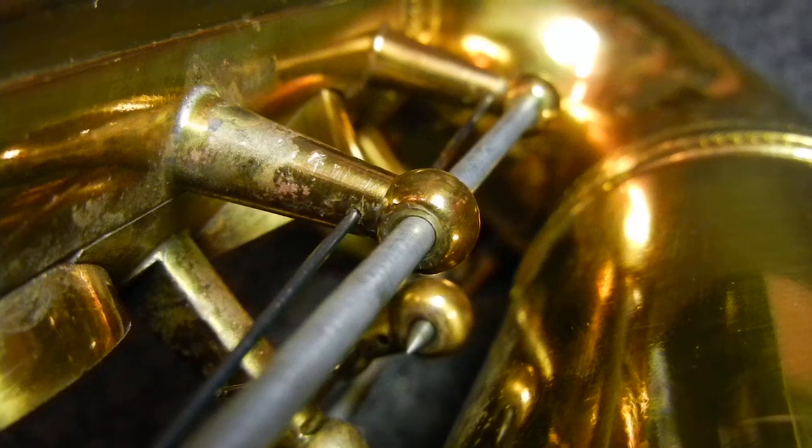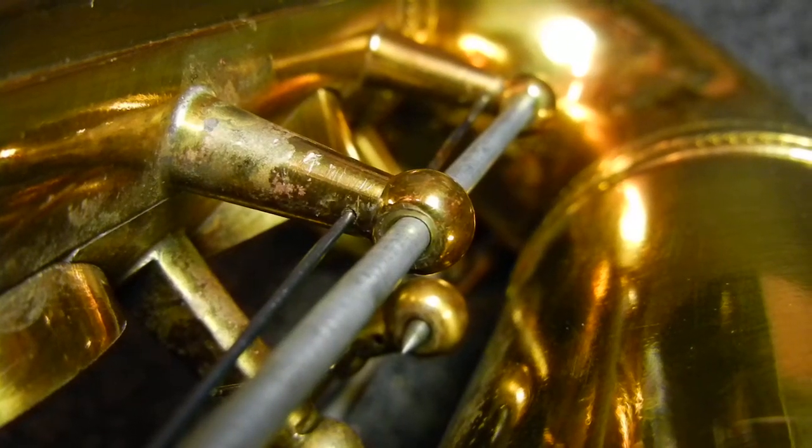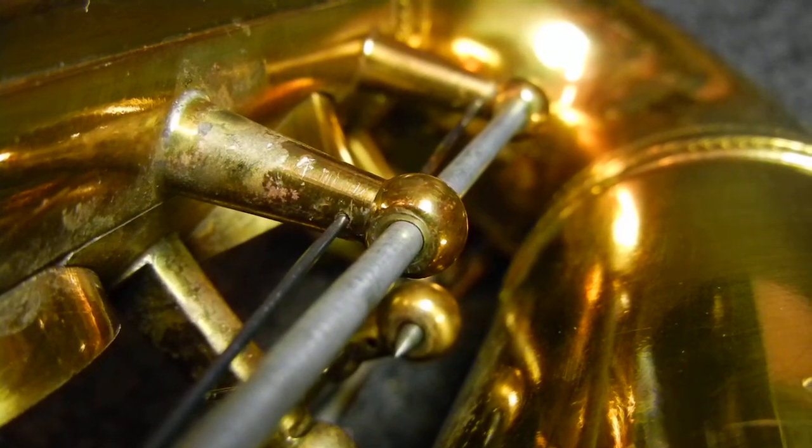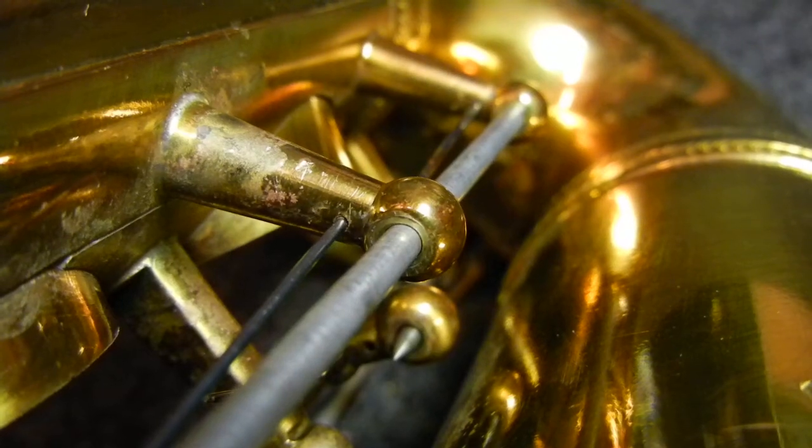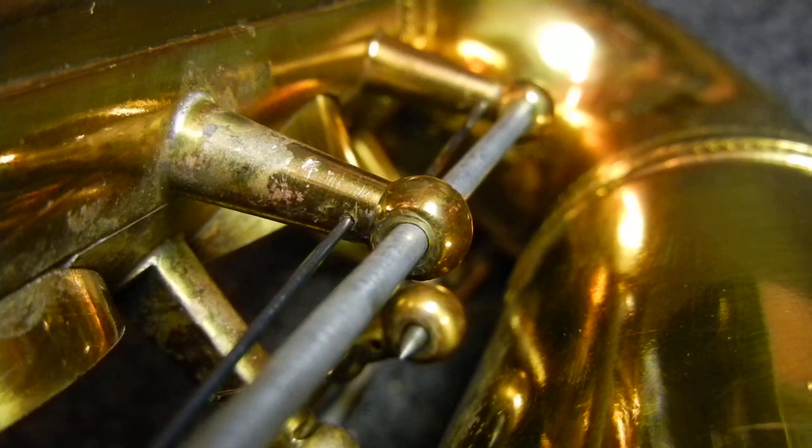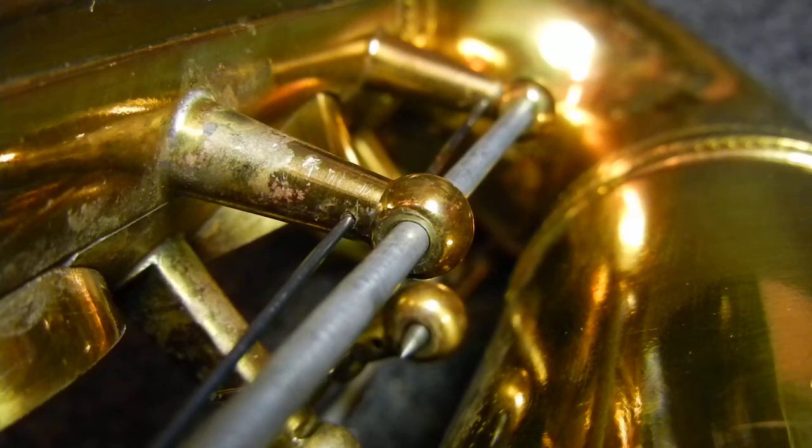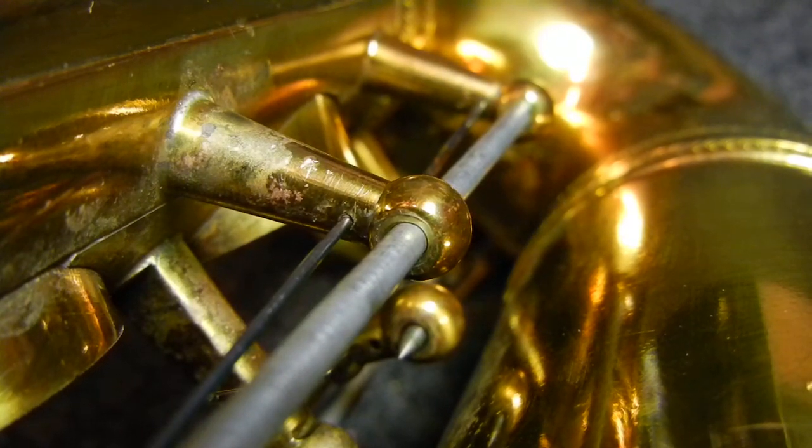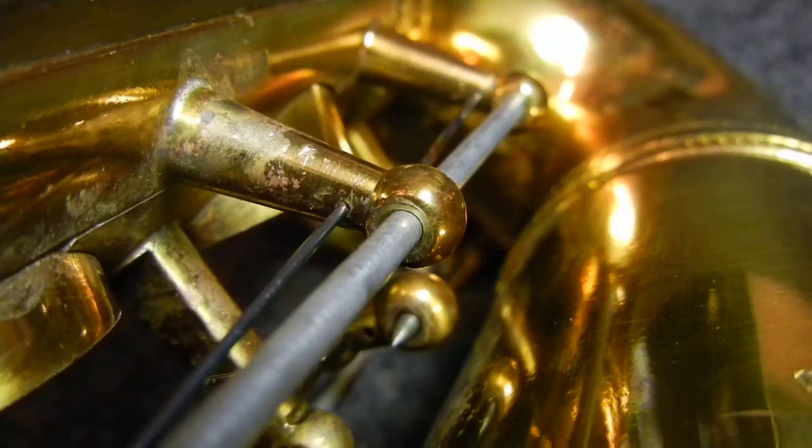So that is a post bushing. Hopefully you see what I'm talking about there. There's the post going through the rod, or the rod going through the post. And inside the post there is a small cylinder of metal soldered inside of it to make this nice and tight. And then I have faced the post flat.